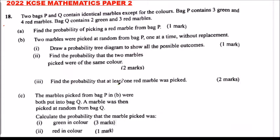This is 2022 KCSE Mathematics Paper 2, Question number 18. Two bags P and Q contain identical marbles except for the colors. Bag P contains three green and four red marbles. Bag Q contains two green and three red marbles.